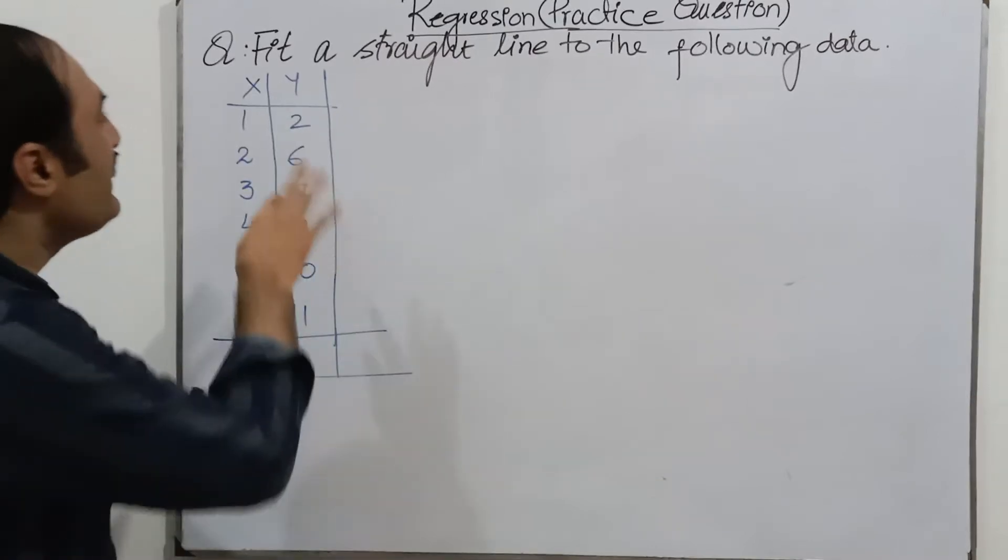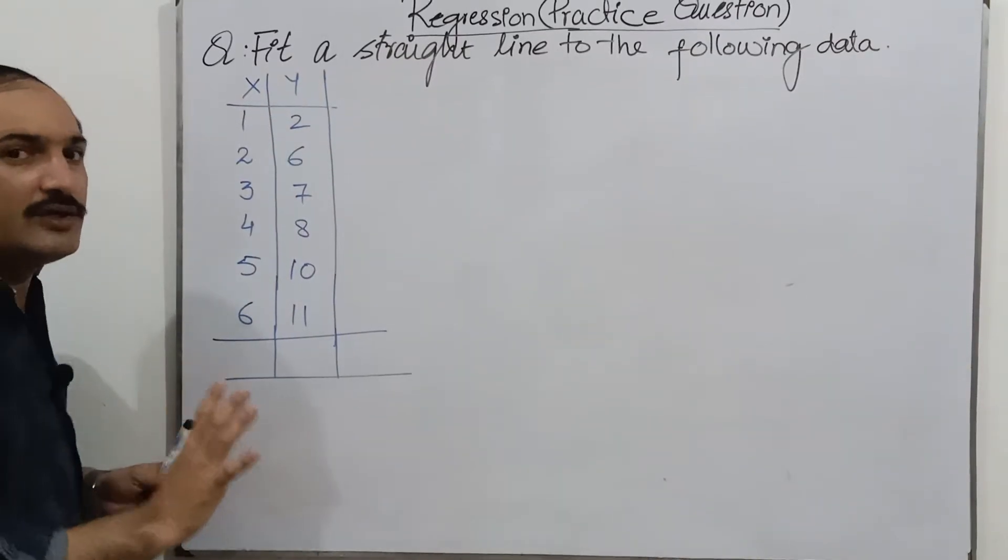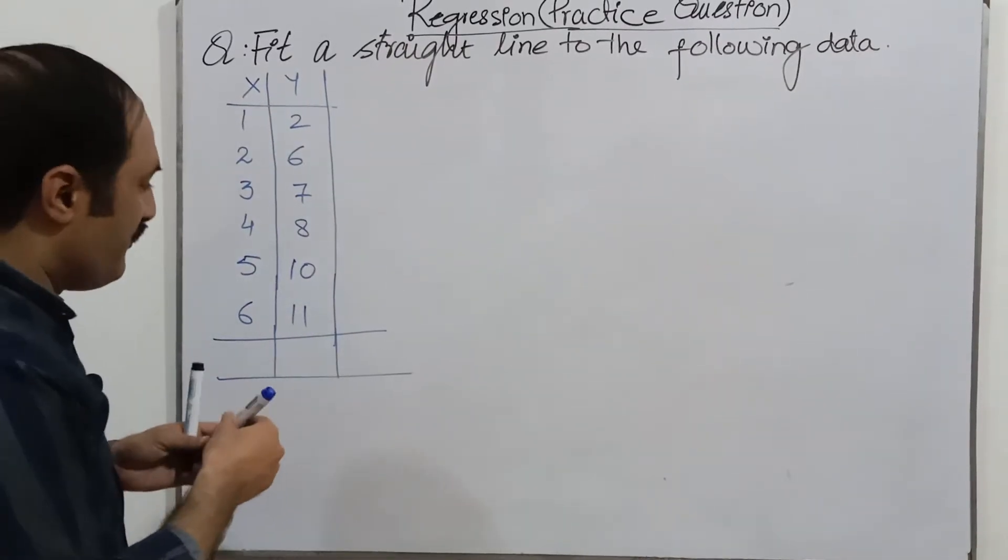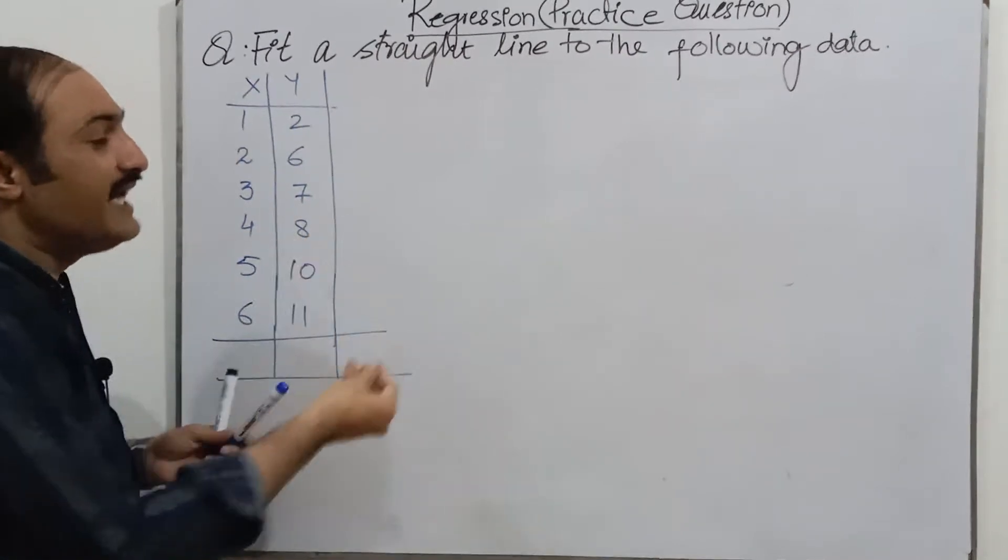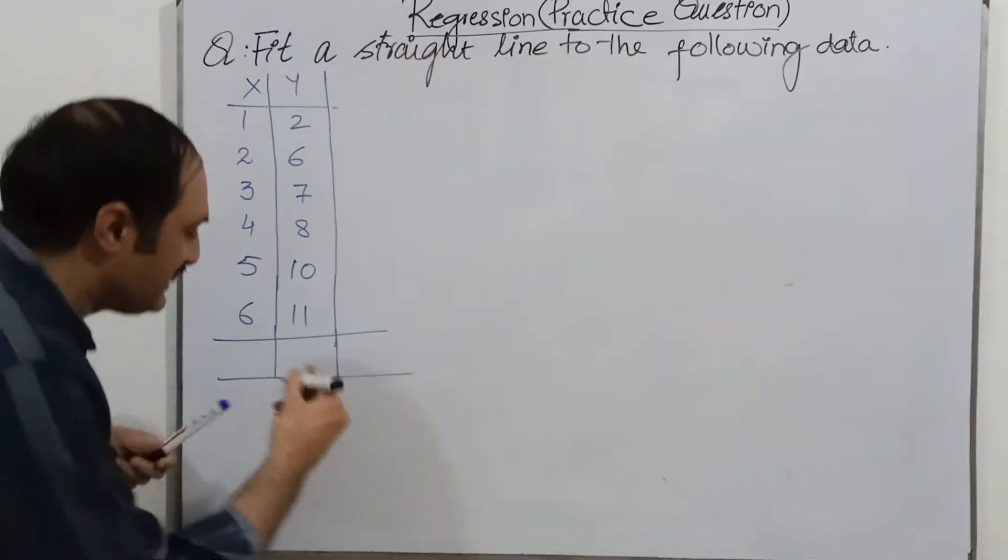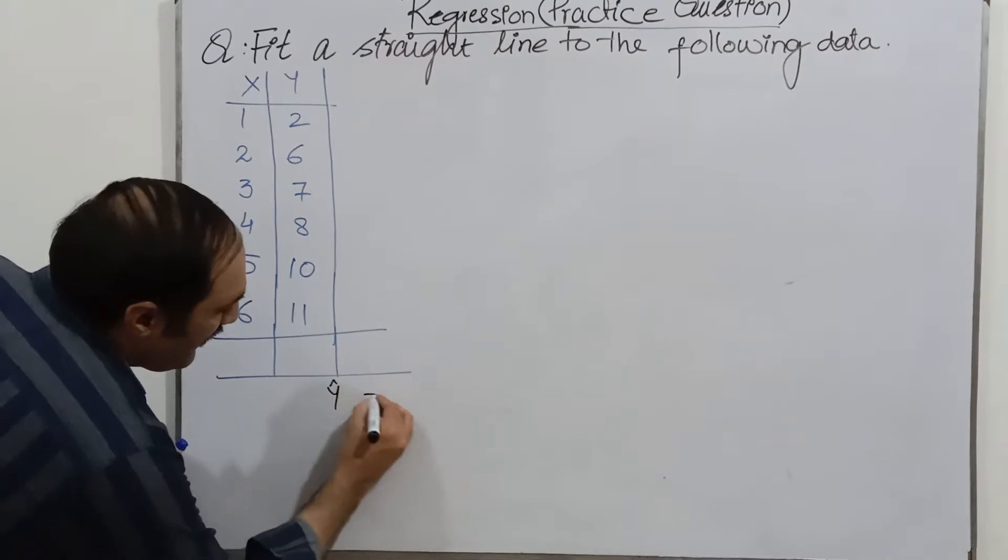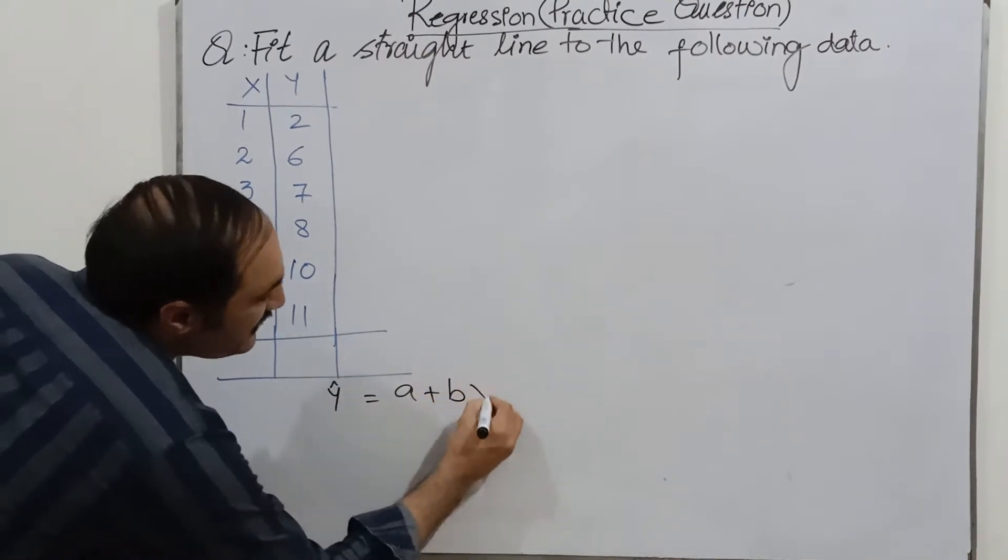So here is one independent and one dependent variable. So what is regression line or what is straight line? That is y hat is equal to a plus bx.